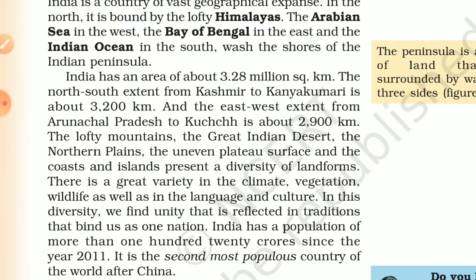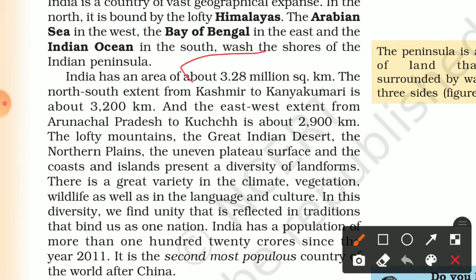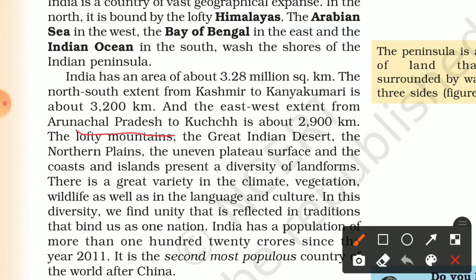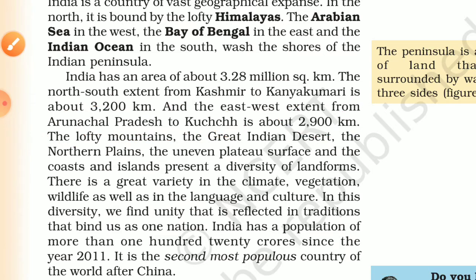India has an area of about 3.28 million square kilometers — this is an important fact. The north-south extent from Kashmir to Kanyakumari is about 3,200 kilometers, and the east-west extent from Arunachal Pradesh to Kutch is about 2,900 kilometers.